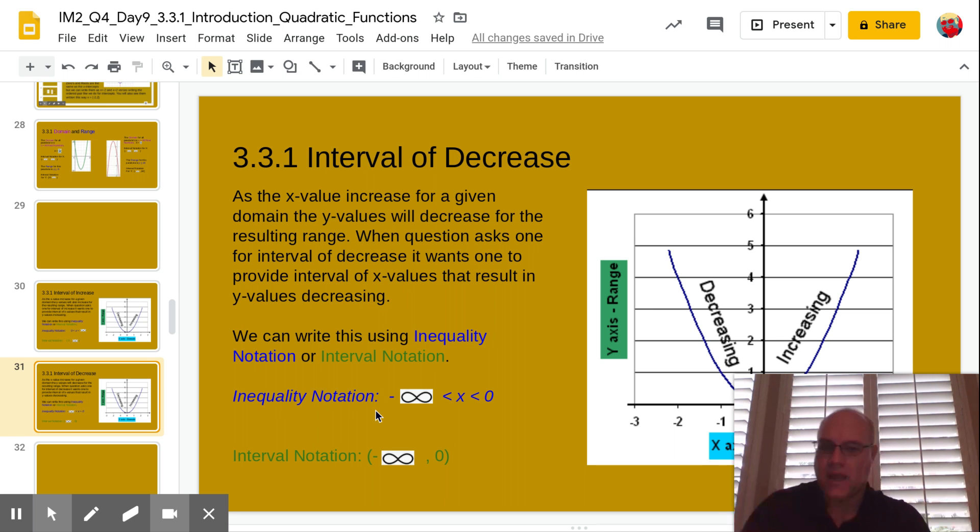The interval notation again, it goes from negative infinity is your smallest number, and all the way to zero. And we only use parentheses because it doesn't include zero, it doesn't include negative infinity.